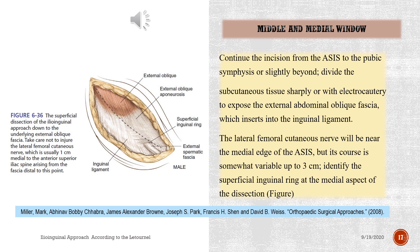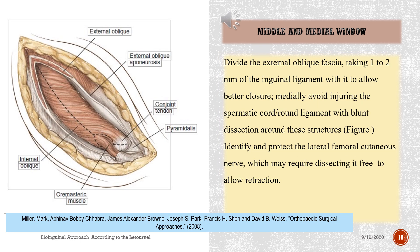Middle and medial window: continue the incision from the ASIS to the pubic symphysis or slightly beyond; divide the subcutaneous tissue sharply or with electrocautery to expose the external abdominal oblique fascia, which inserts into the inguinal ligament. The lateral femoral cutaneous nerve will be near the medial edge of the ASIS, but its course is somewhat variable up to 3 cm. Identify the superficial inguinal ring at the medial aspect of the dissection. Divide the external oblique fascia, taking 1–2 mm of the inguinal ligament with it to allow better closure. Medially avoid injuring the spermatic cord or round ligament with blunt dissection around these structures. Identify and protect the lateral femoral cutaneous nerve, which may require dissecting it free to allow retraction.